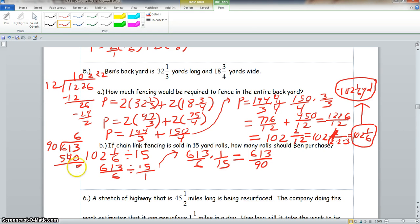3 minus 0 is 3. We know we cannot subtract 4 from 1, so we will borrow 1 from this 6. And that would become 5, and this 1 would be 11. 11 minus 4 is 7, and we know this 5 minus 5 would be 0. So our remainder is 73. So what we would have here, we would have 6 and 73 over 90.